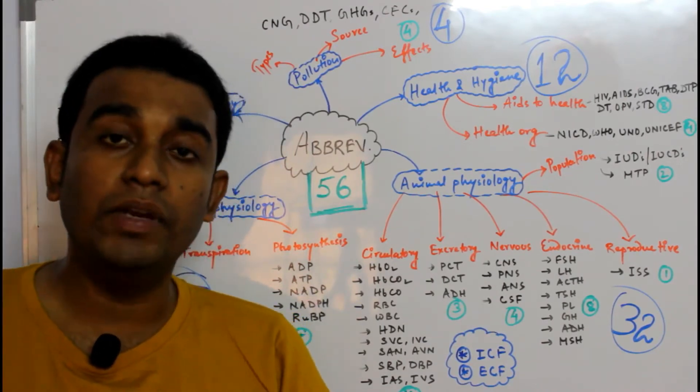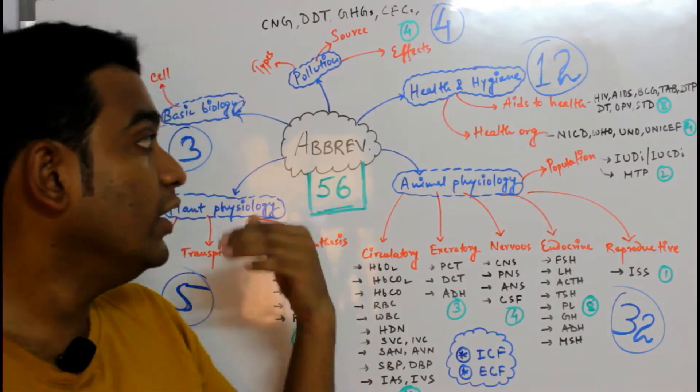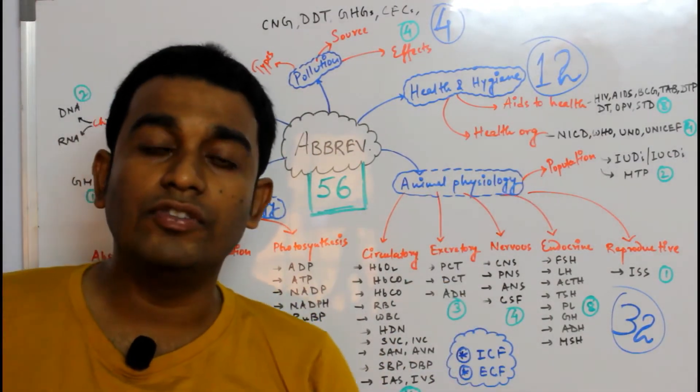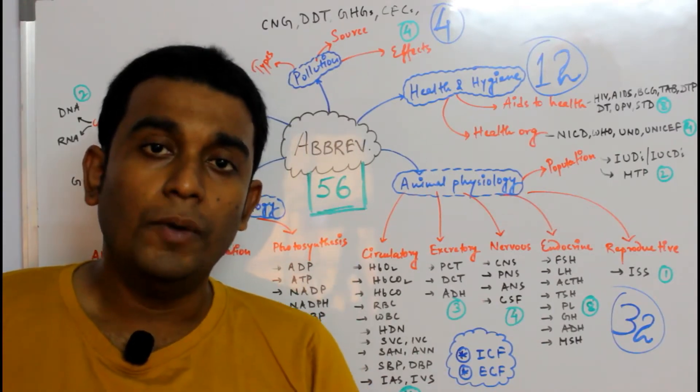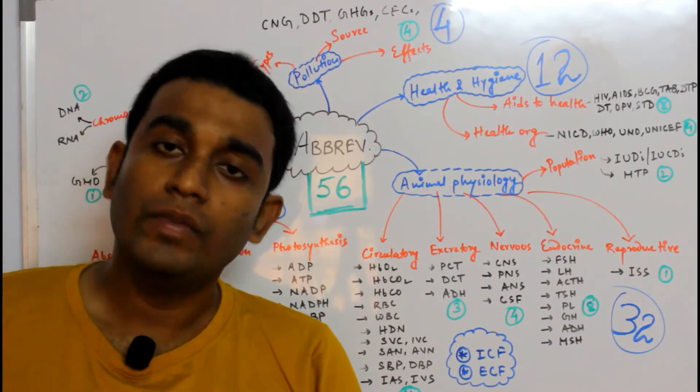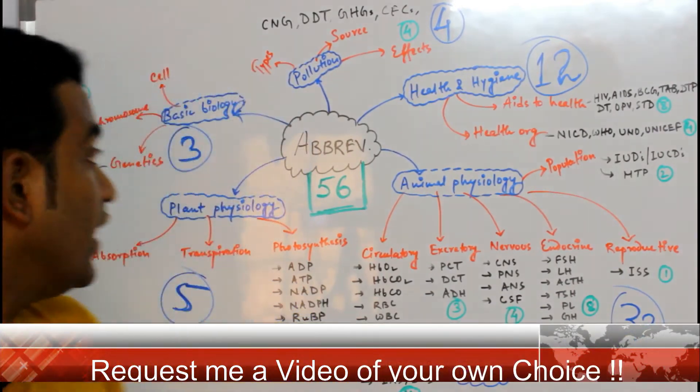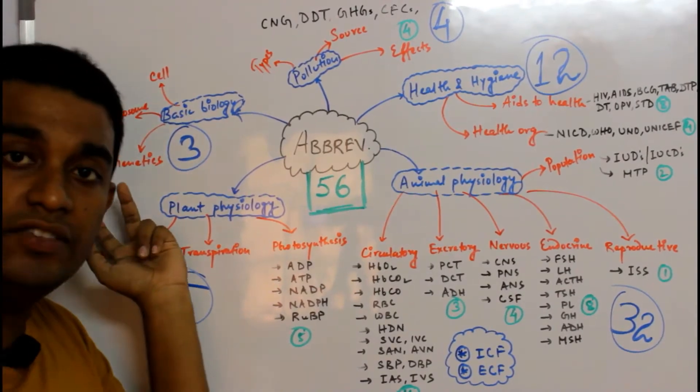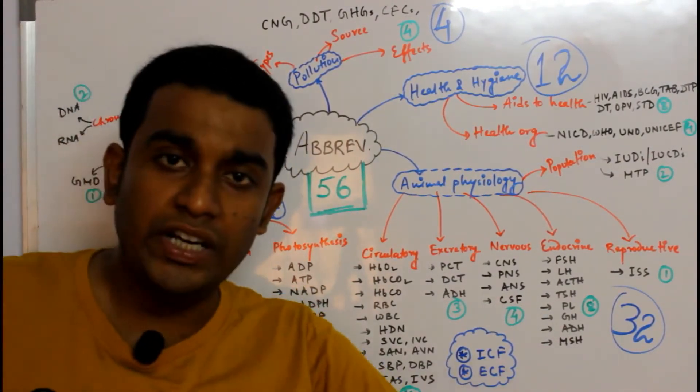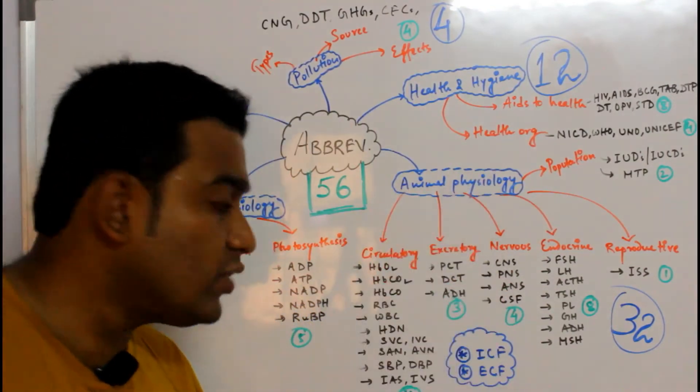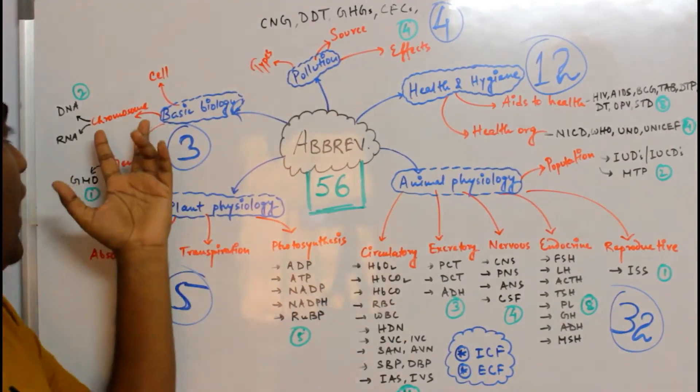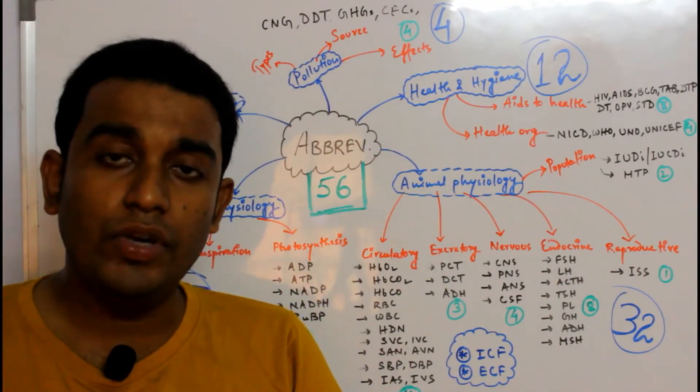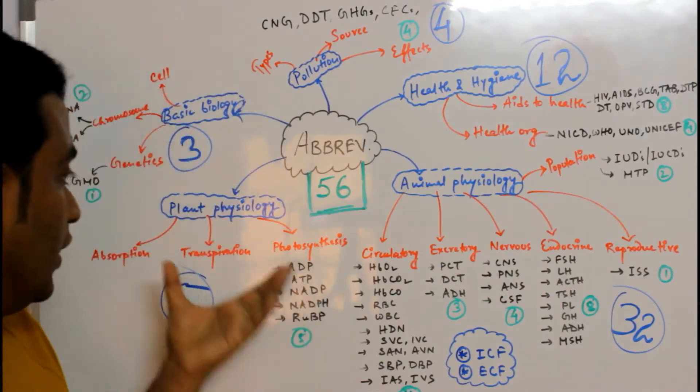Let me also tell you, I have made a PDF of all these abbreviations. If anyone requires this PDF, please give me your email ID in the comment section below so I can send it individually. From Basic Biology, I have collected three abbreviations: GMO (Genetically Modified Organisms), DNA (Deoxyribonucleic Acid), and RNA (Ribonucleic Acid).